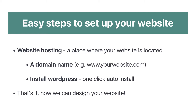Next, you will need a domain name — something like www.yourwebsite.com or www.youtube.com. These normally cost around $10 to $50 a year, but with the host I recommend in the description box below, you'll be able to get these for free. Then you just need to install WordPress — it's literally just one click. So that's all you need: hosting, a domain name, and WordPress installed. Then we can get onto the fun part: designing your website.